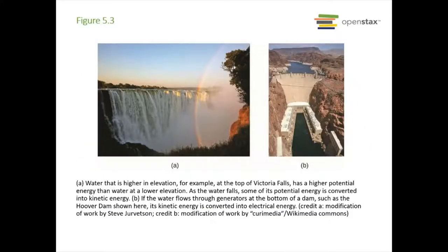Here's some pictures. In picture a is Victoria Falls. At the very top is very high potential energy. This water has the potential to start moving. As it starts flowing down that potential energy starts going down but it's being converted to kinetic energy. It's moving faster and faster as it goes down.